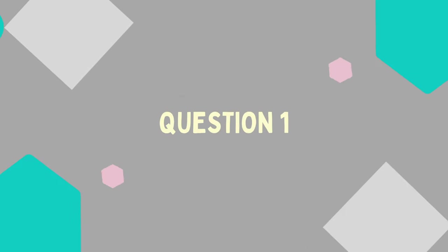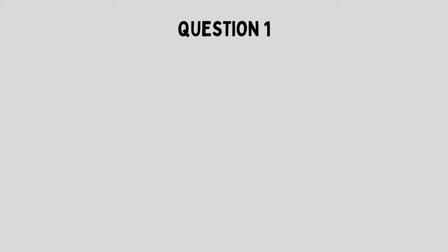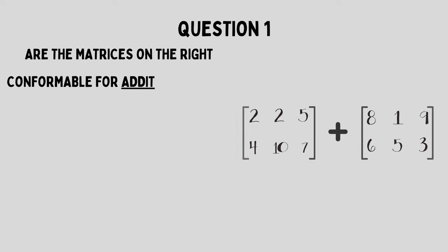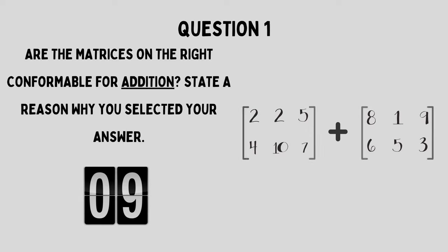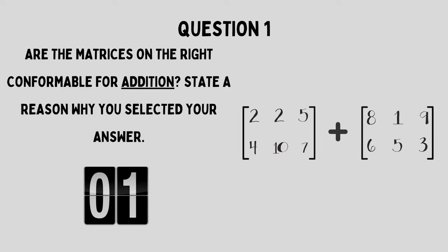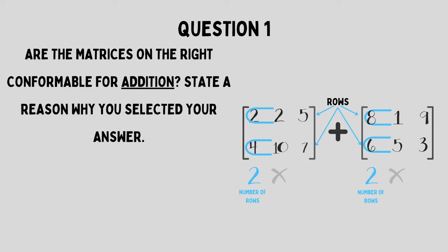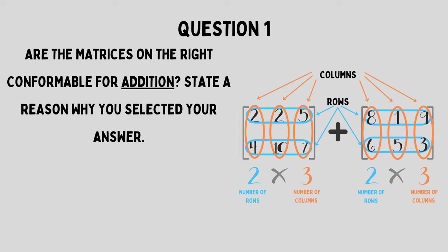Question number one: Are the matrices on the right conformable for addition? State a reason why you selected your answer. Yes, these are conformable for addition. This is because we have the same order — both matrices have two rows and three columns.